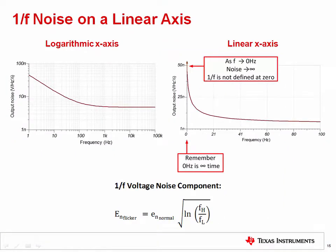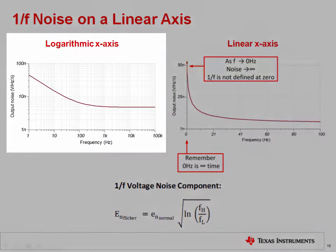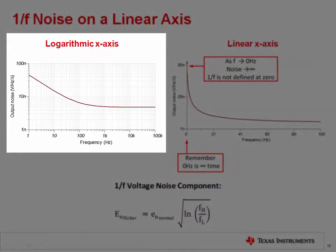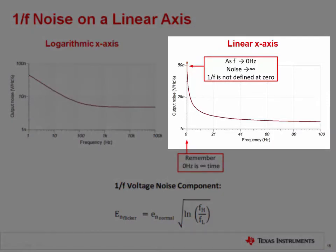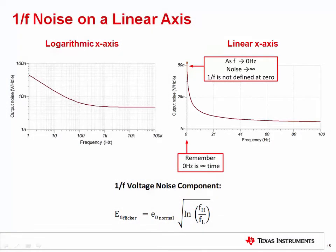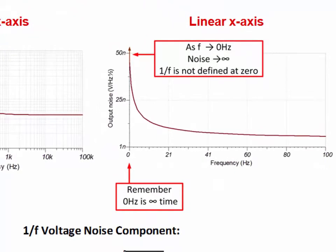Remember that we normally look at noise spectral density on a graph with a logarithmic x axis. If we instead consider the spectral density curve with the linear x axis, it becomes clear that noise increases to infinity at 0 hertz. The fact that noise is infinite at 0 hertz sounds alarming until you consider that 0 hertz corresponds to infinite time. Infinite time is not practical to consider.